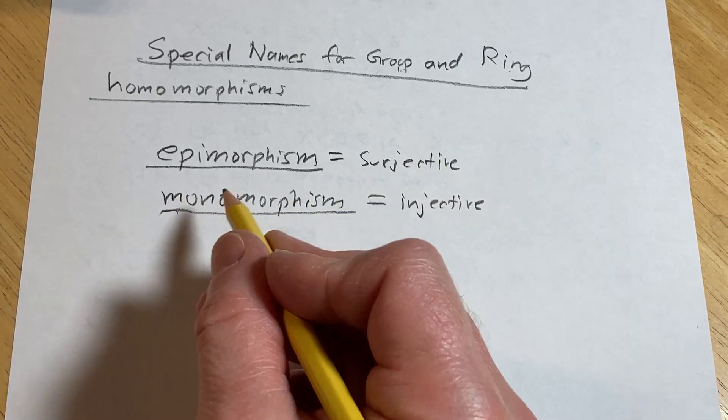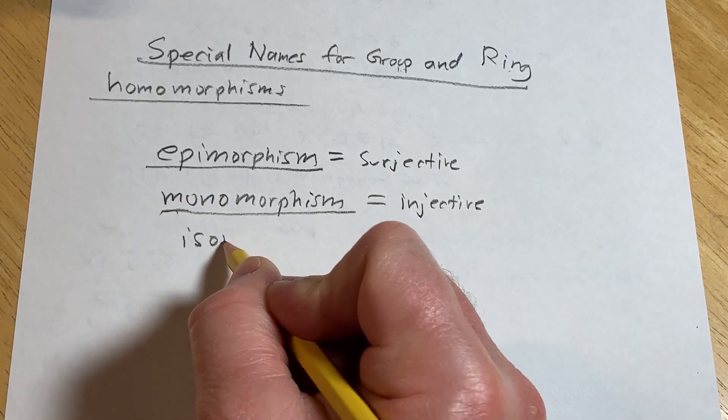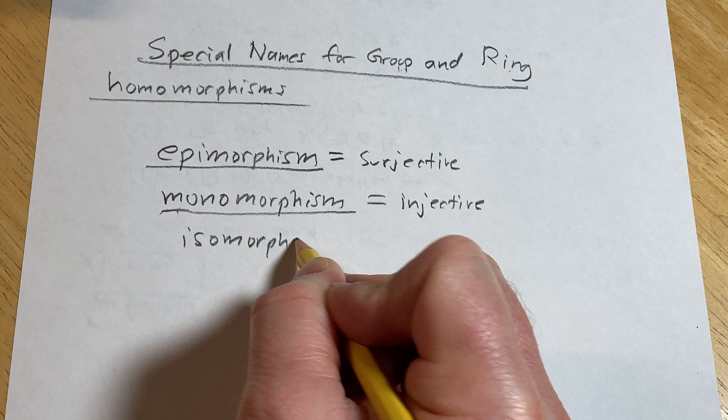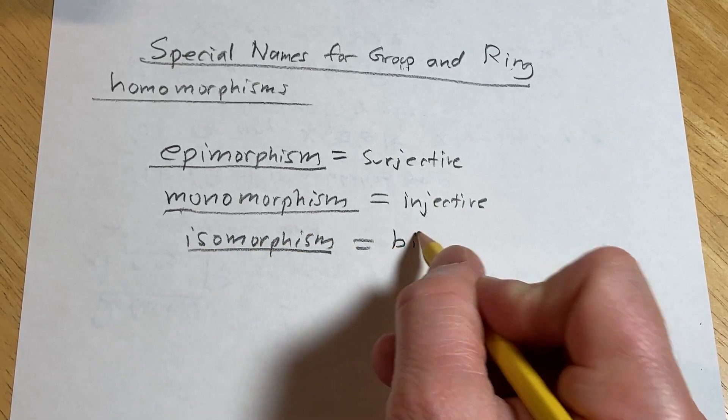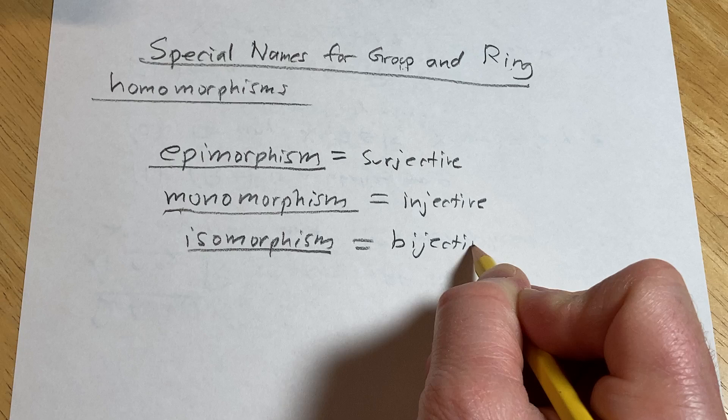And last but not least, I'm sure you've heard the word isomorphism. This is just a bijective group or ring homomorphism.